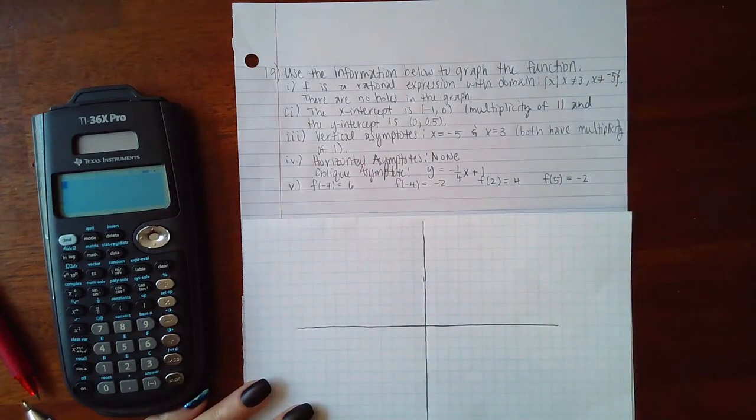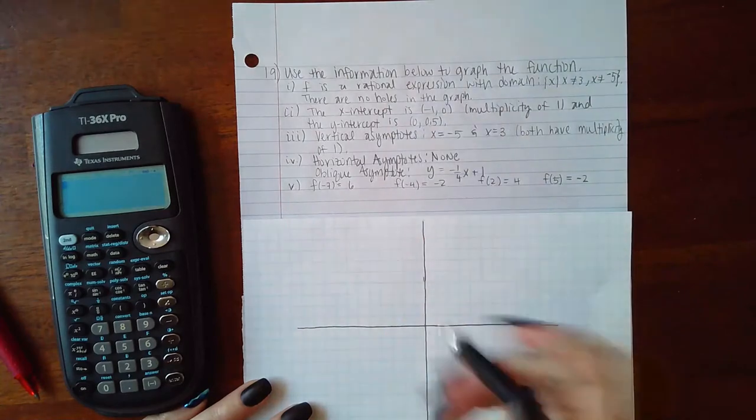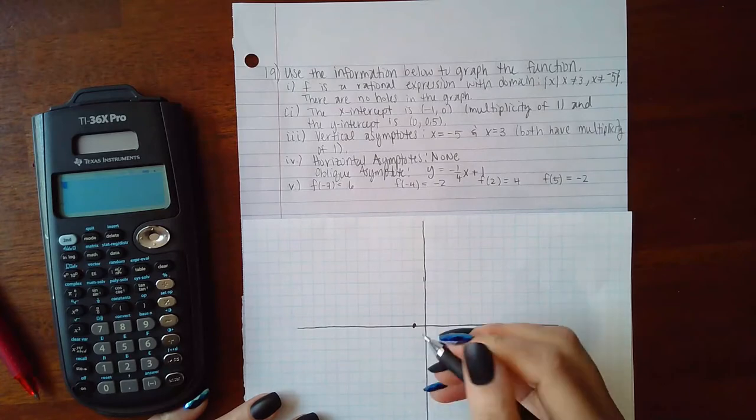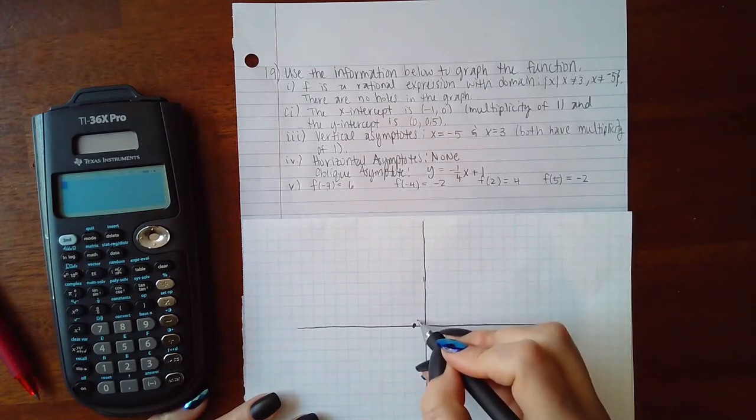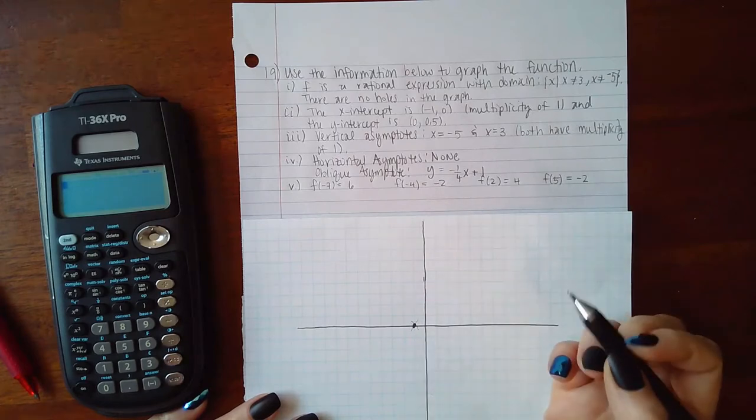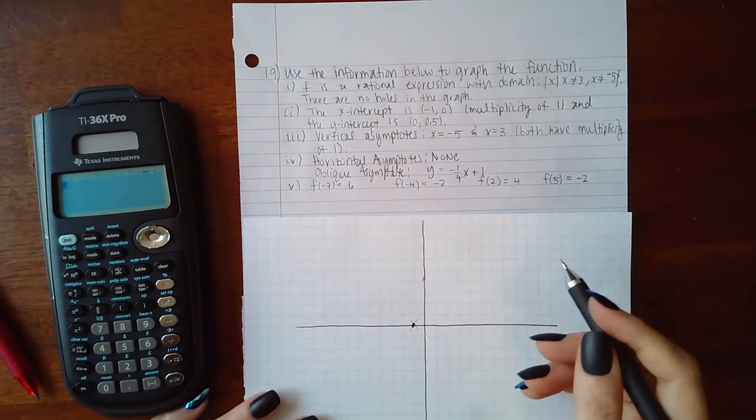The next thing it tells me is it has an x-intercept of negative 1, 0, so that's this point here, with the multiplicity of 1. What that tells me is that I'm either going to cross this intercept like this, or I'm going to cross it like that. I don't know yet until I have more information.